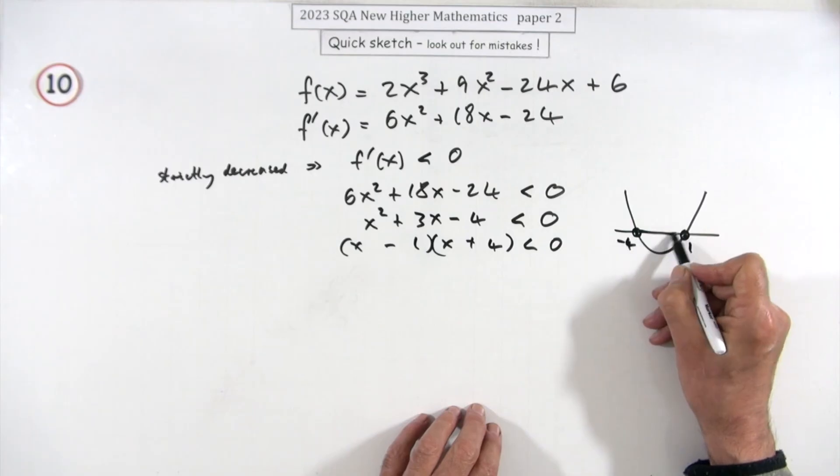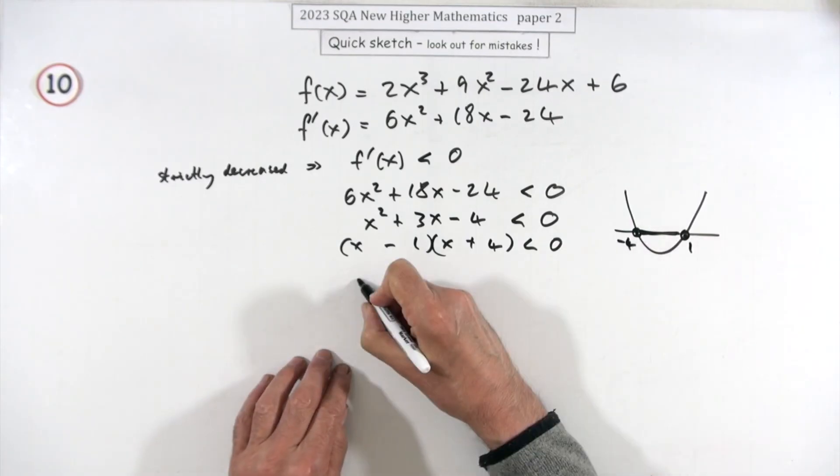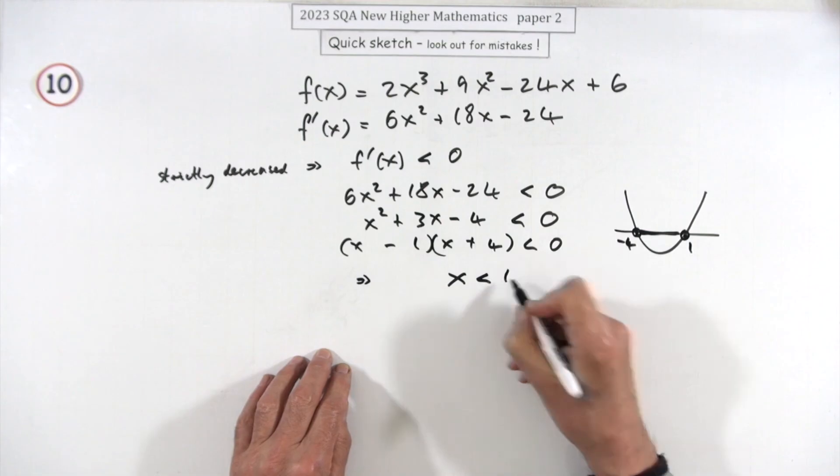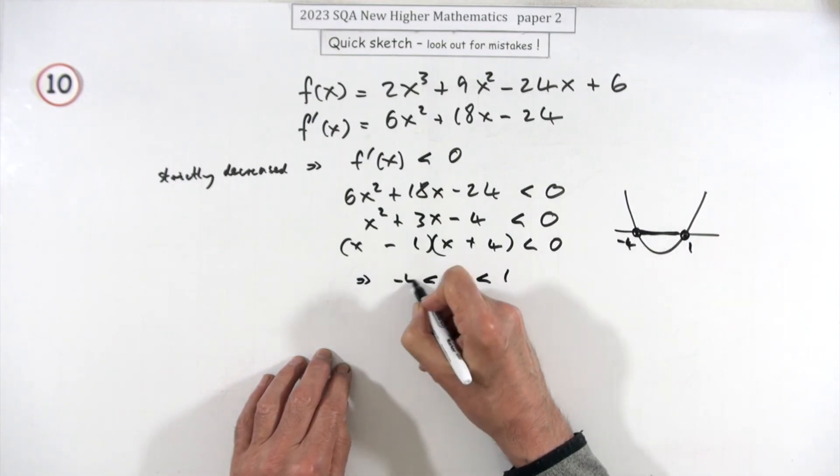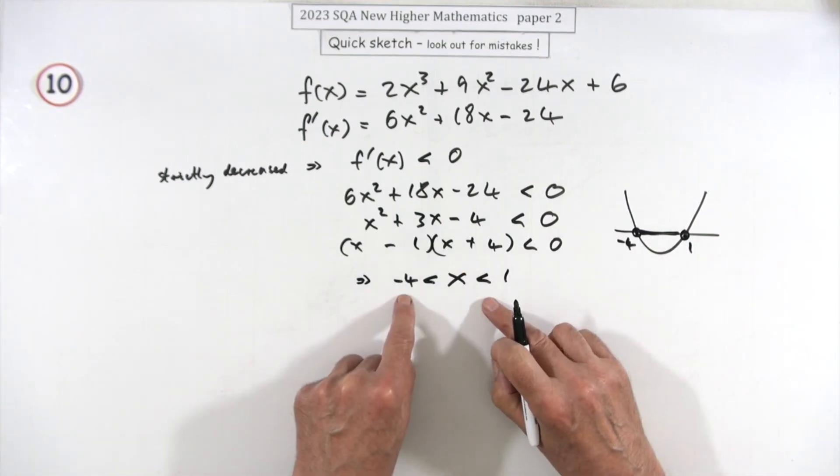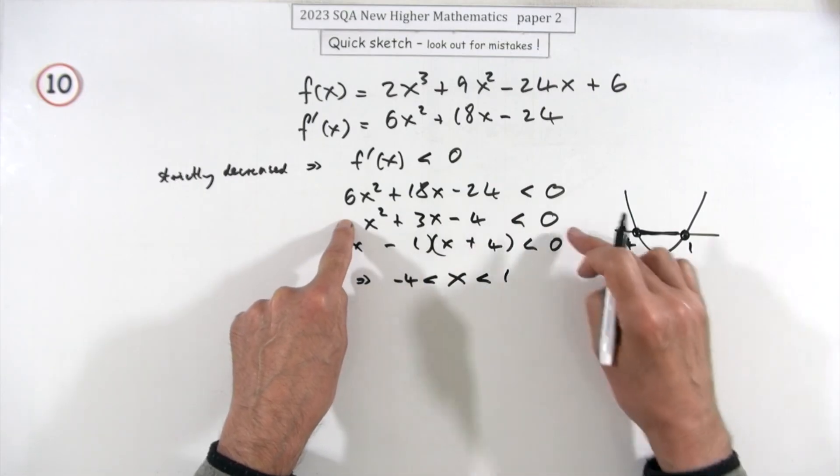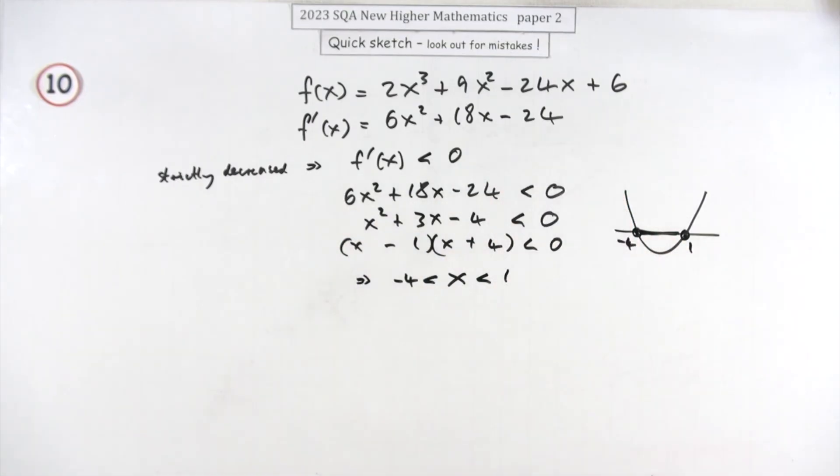So when will the values on this be negative? It's between them, but I'm not including them because it's to be strictly decreasing. So it's these values here. So that simply means x has to be less than 1 or greater than -4. If that's the case, this will be less than zero, and obviously so will that because it's just 6 times it.